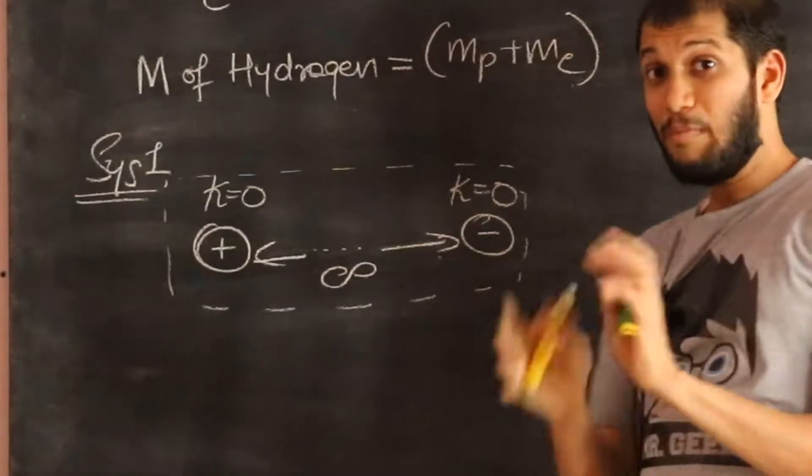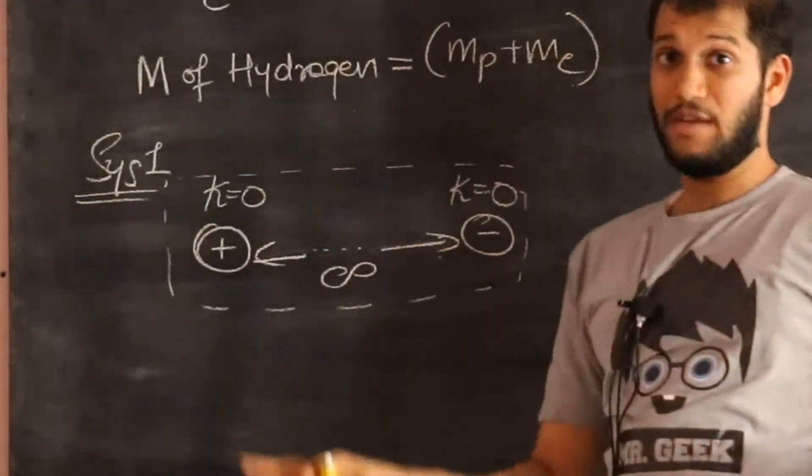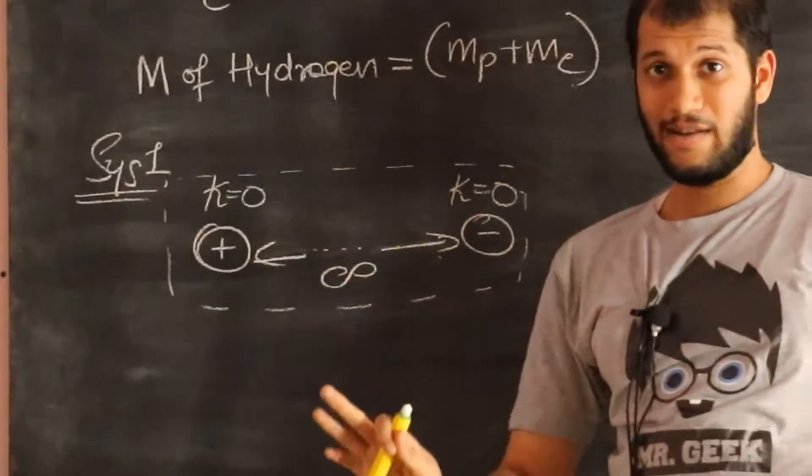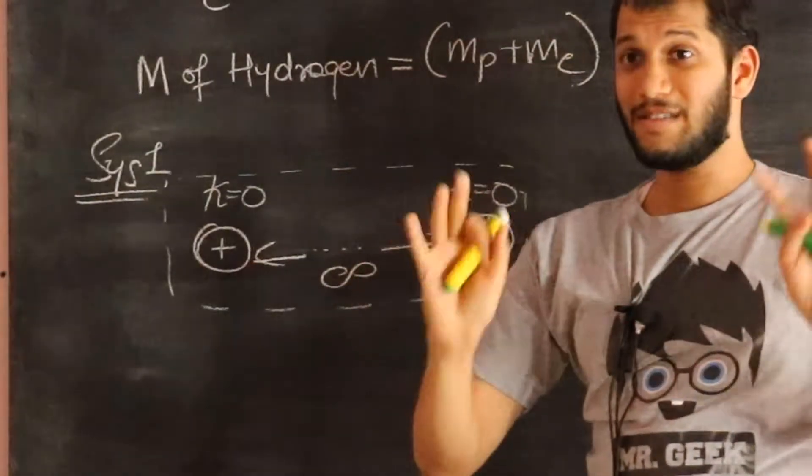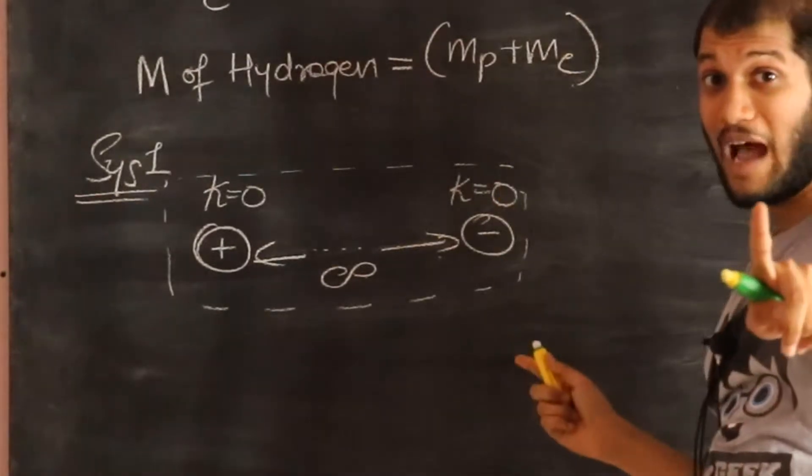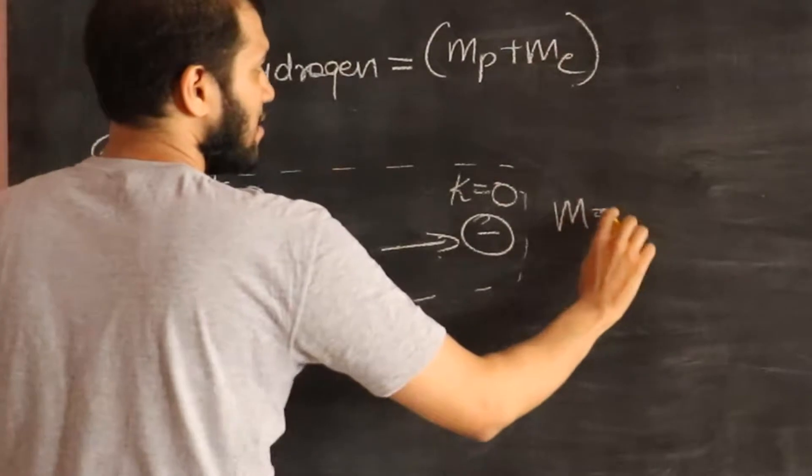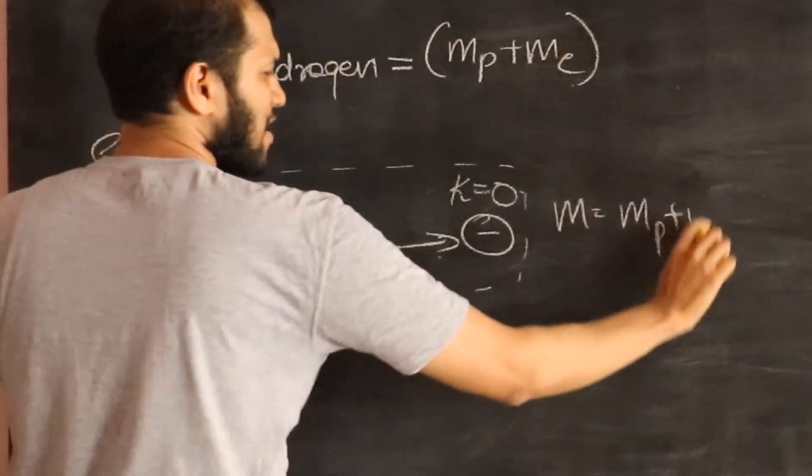Well, the mass of that system would be the mass of the proton plus the mass of the electron plus any additional energy. Well, they are not influencing each other, there is no potential energy, and there is absolutely no kinetic energy. And therefore, the mass of the whole system now truly becomes mass of the proton plus mass of the electron. This is not the hydrogen atom yet. So this mass is mass of the proton plus mass of the electron.